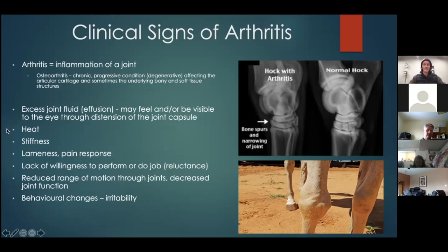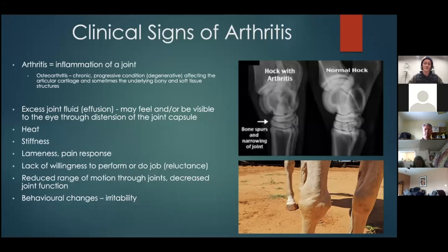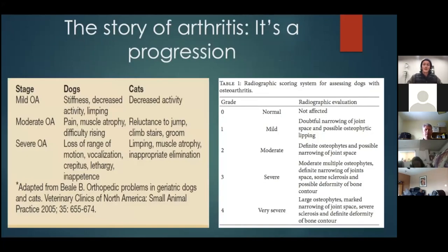Other signs of arthritis include heat, stiffness, and a lack of willingness to perform a job — especially one the horse has done before. There can be reduced range of motion through the joints, indicating decreased joint function. Behavioral changes are also common — an irritable horse is trying to tell you something; they may become very grouchy or just not their usual demeanor.